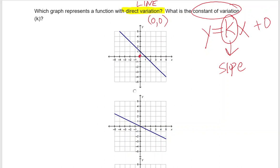So here's the point 0, 0. This line does not go through that point, therefore it is not direct variation.